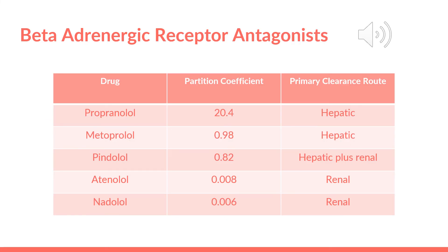Now let's check the pharmacokinetics of each drug of the beta-1 antagonists. For atenolol and nadolol, we can see that they have the lowest partition coefficient, which means that they are the most polar, and they are excreted renally. However, propranolol, metoprolol, and pindolol are excreted hepatically, in addition to pindolol, which is also excreted renally.